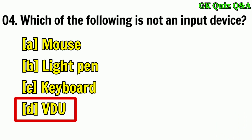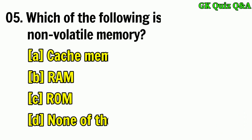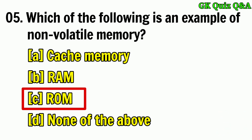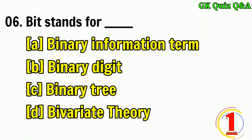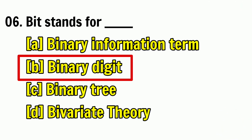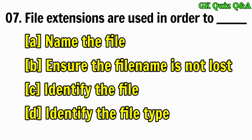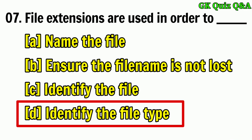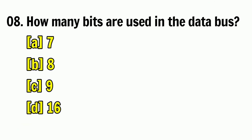Which of the following is an example of non-volatile memory? Answer: C — ROM. What does ROM stand for? Answer: B — Read-Only Memory. File extensions are used in order to? Answer: D — Identifying the file type. How many bits are used in the data bus?